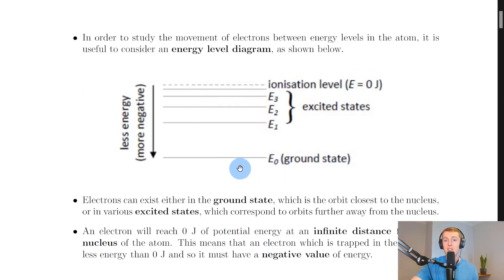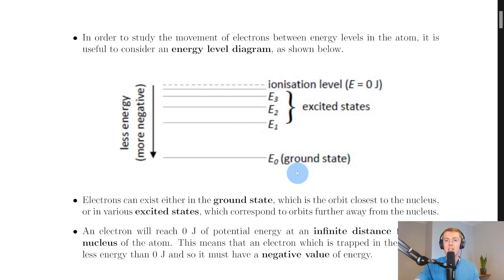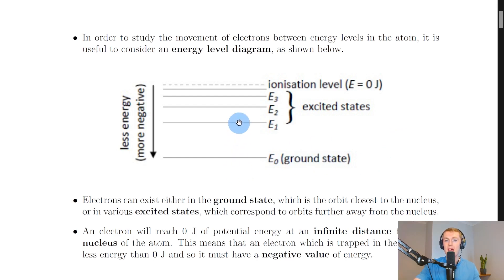It's worth thinking about the values these energy levels can take below the ionization level. The ionization level is at zero joules. The ground state E0 is the energy level closest to the nucleus, so it would have a large negative value. As we go up the energy levels, the value becomes a smaller negative — i.e., more positive or less negative — going in the opposite direction to the downward arrow.